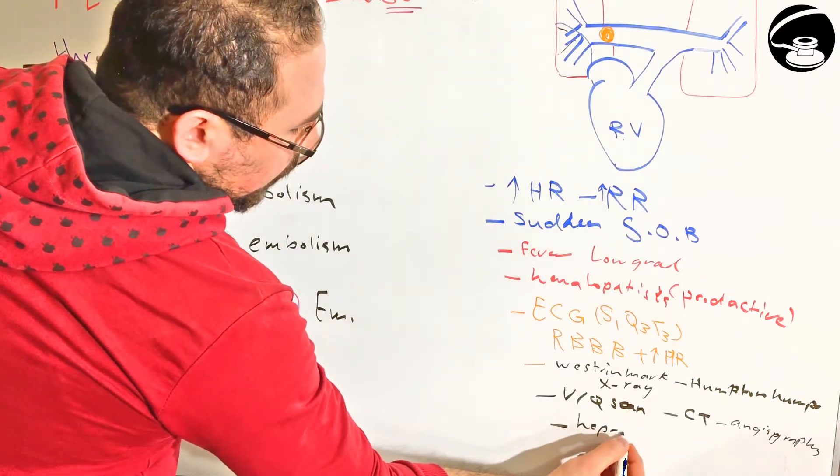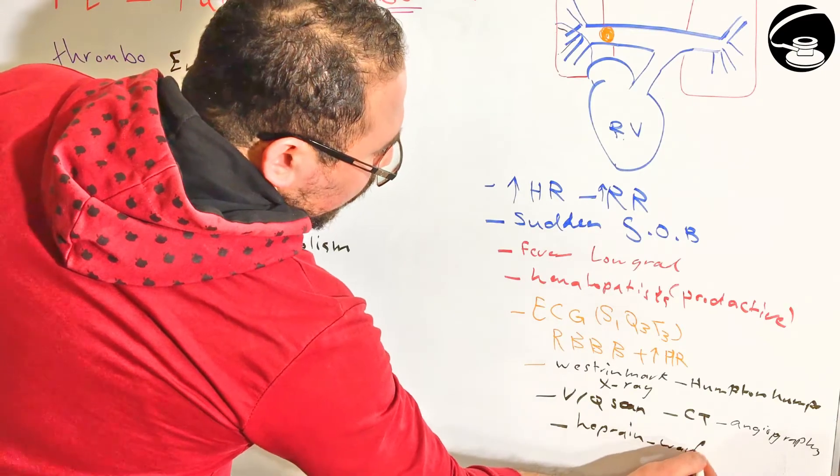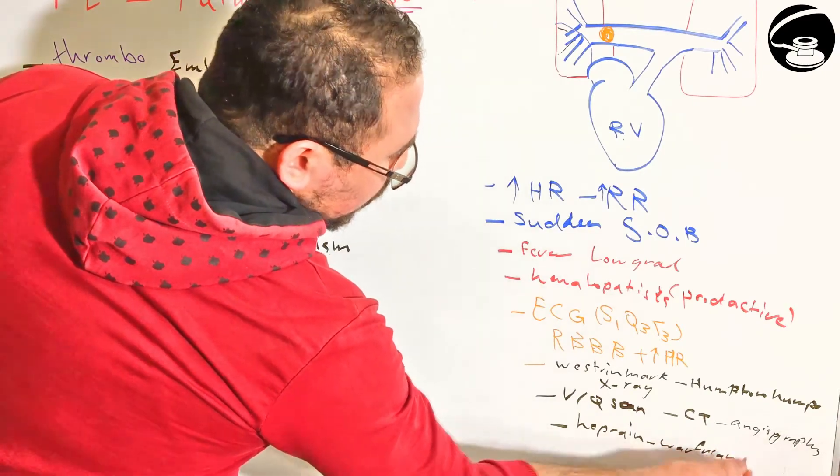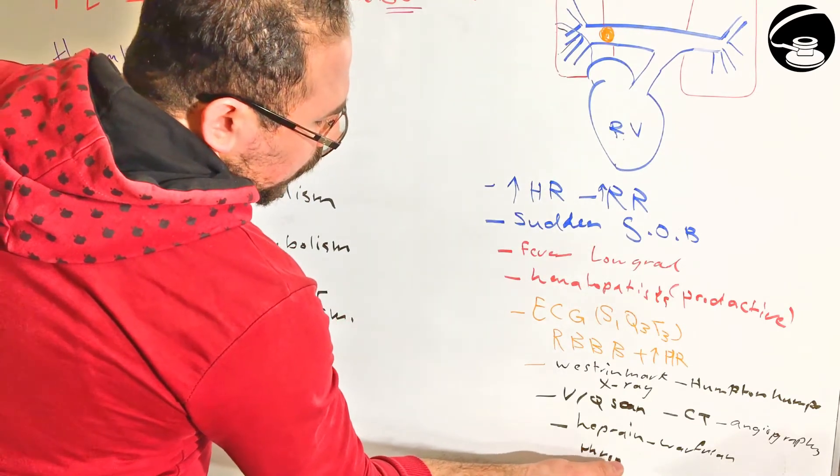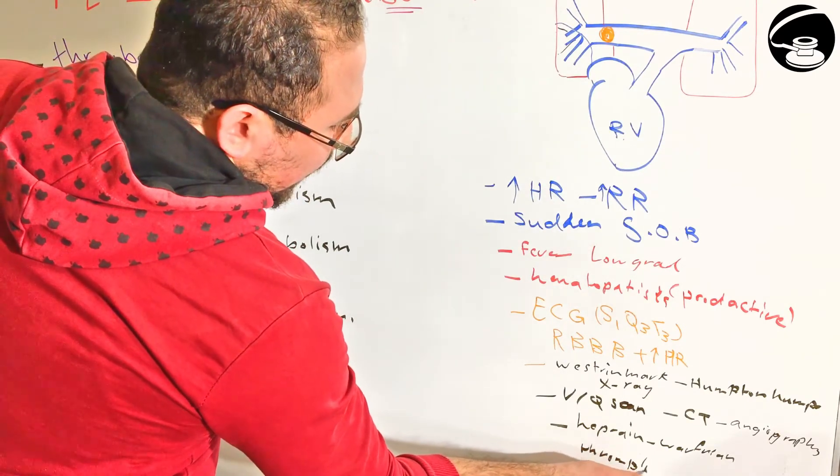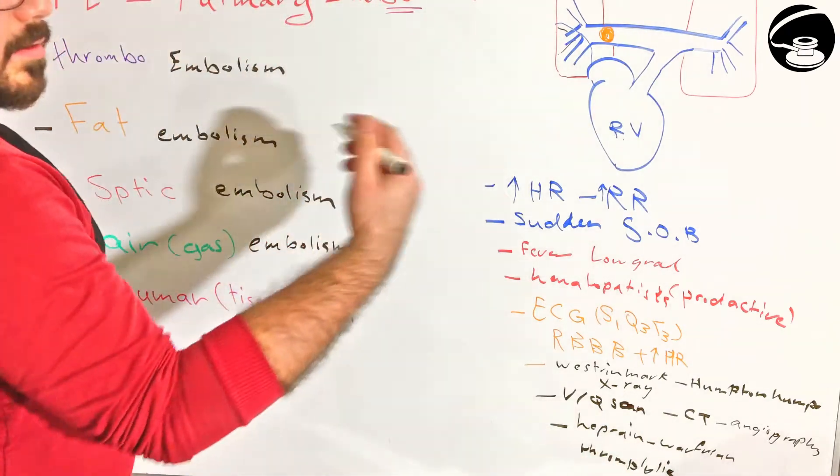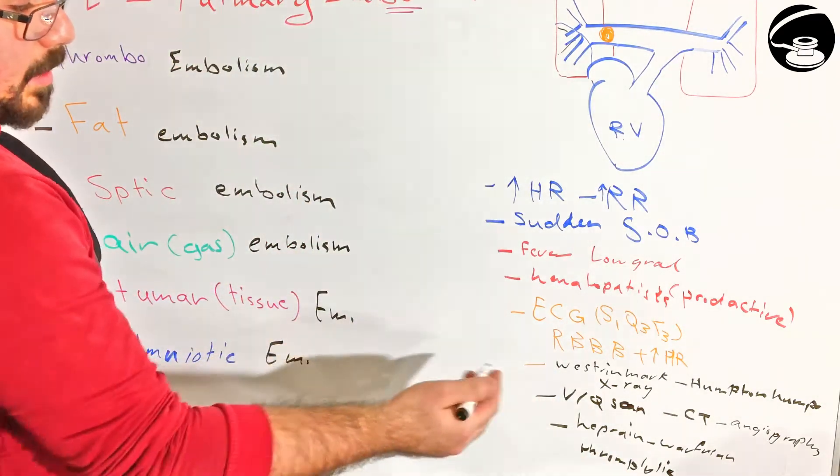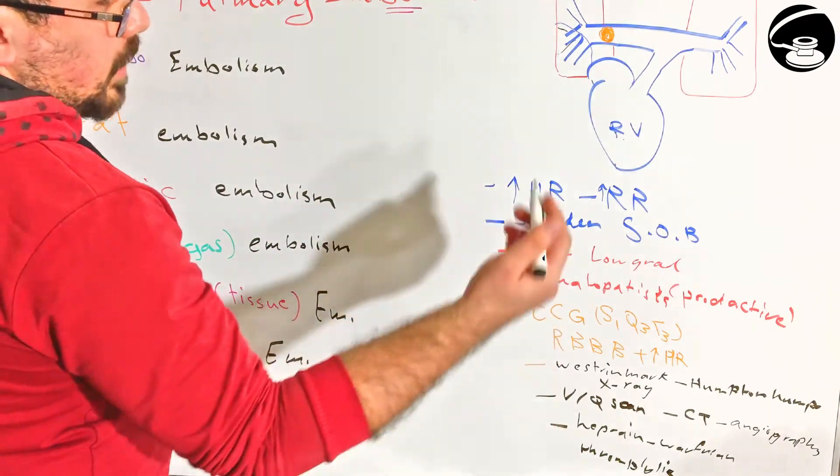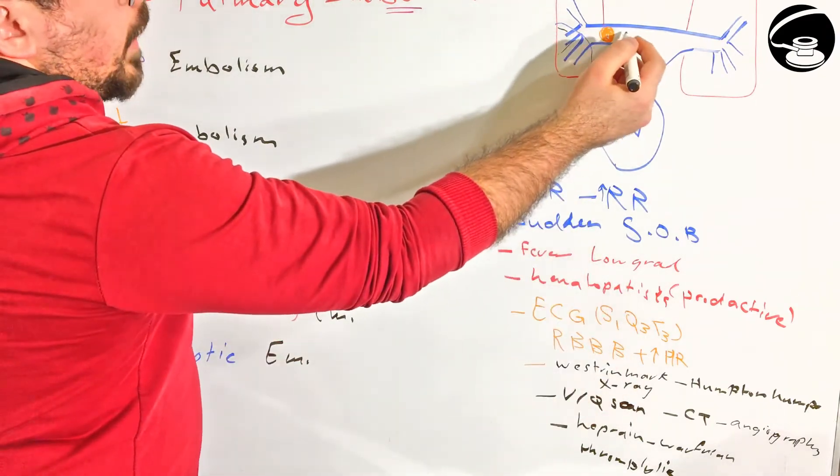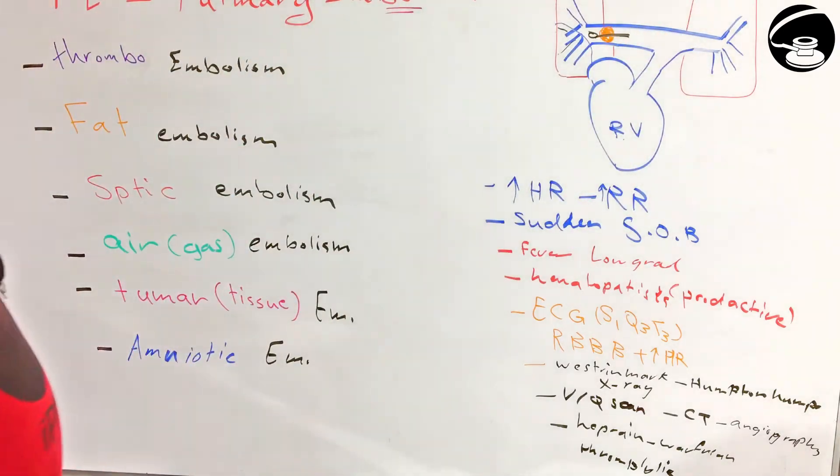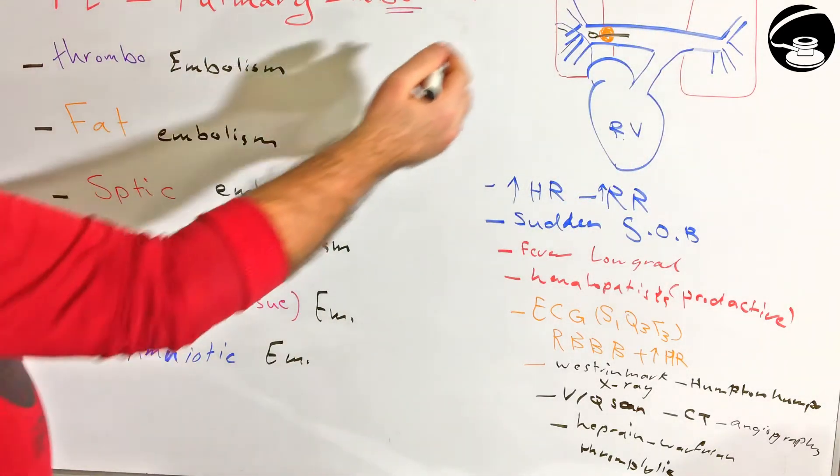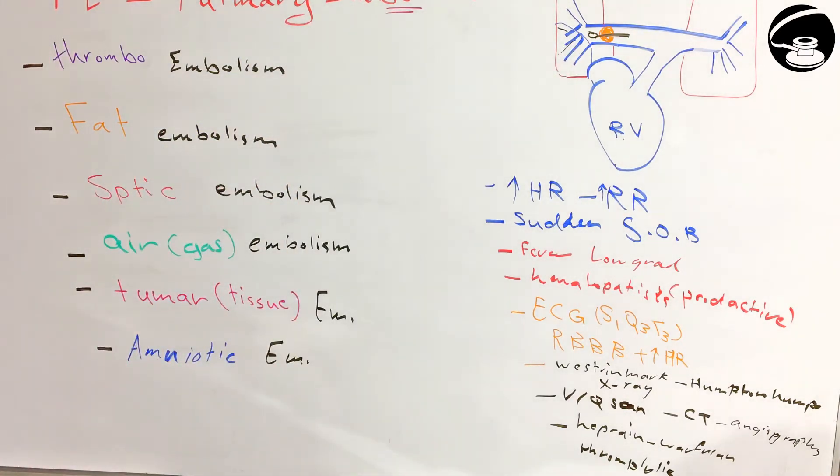For treatment we use heparin and warfarin, which is basically a drug that is thinning your blood. And we can use thrombolytic drugs like streptokinase and alteplase, but that's not usually done. Basically, we can use a catheter and we can do a thrombectomy. We use the catheter and we drag it through the veins and we take the emboli, but if it's small emboli sometimes we miss.